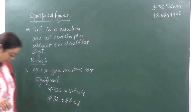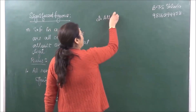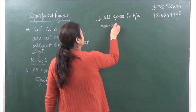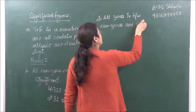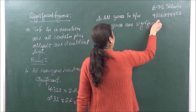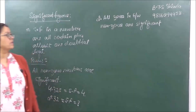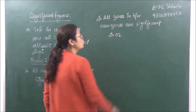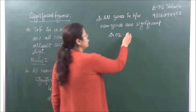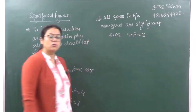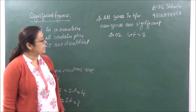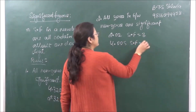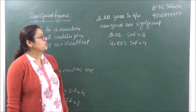Rule 2: All zeros in between non-zero digits are significant. For example, 2.02 — the zero is between two non-zeros, so the number of significant figures is 3. Similarly, 4.005 has 4 significant figures.